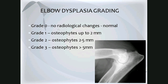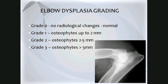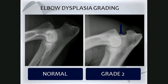Screening with radiographs is far from ideal as subtle lesions can be missed, but it is currently the standard. Grade 0 implies no radiological changes — a normal elbow. Grade 1 has osteophytes up to 2 millimeters high. Grade 2 has osteophytes between 2 to 5 millimeters high. Grade 3 has osteophytes greater than 5 millimeters. On this example radiograph, osteophytes are present on the anconeal process, probably 2–5 millimeters high, making this a grade 2.